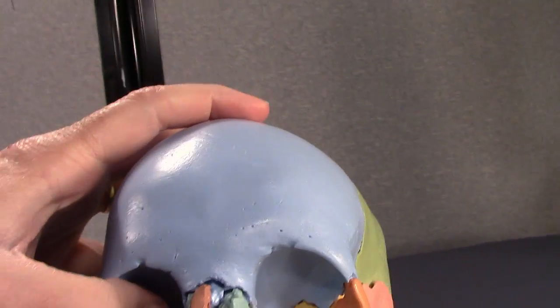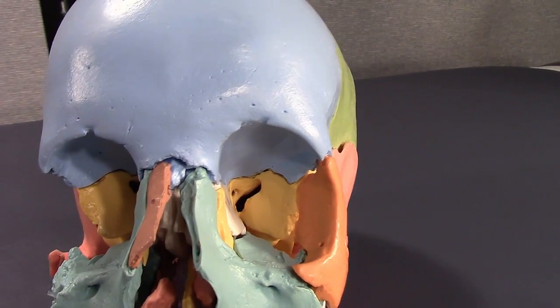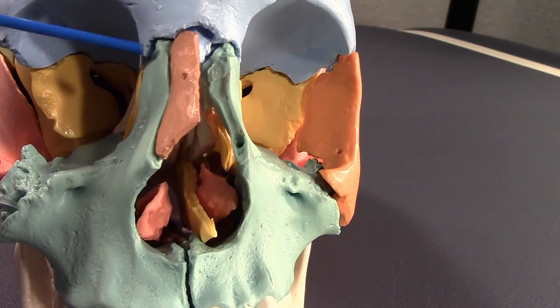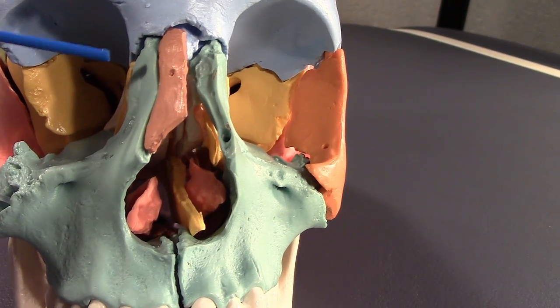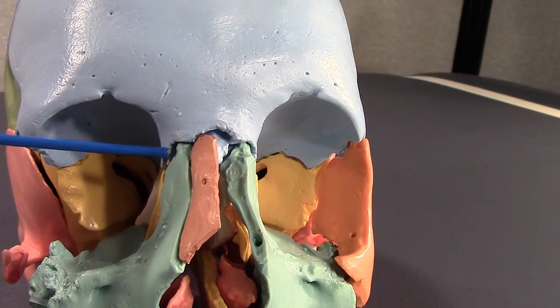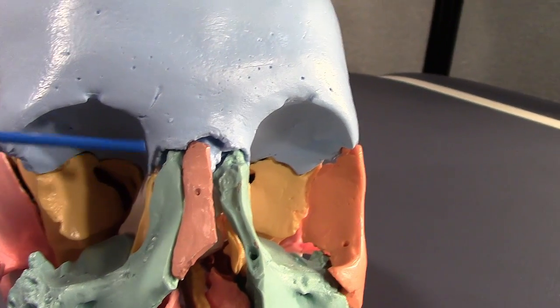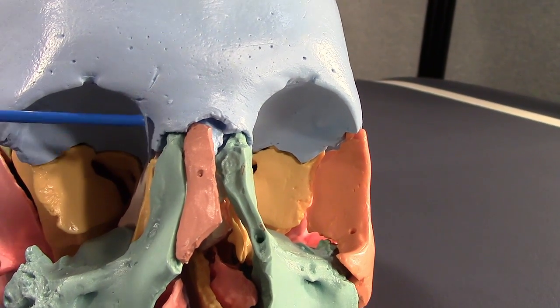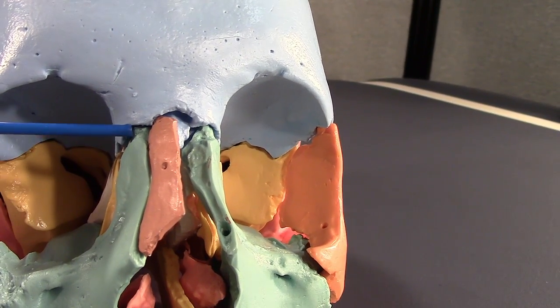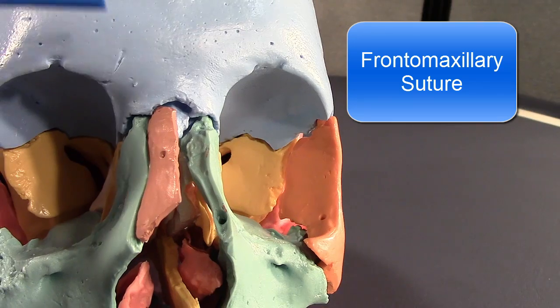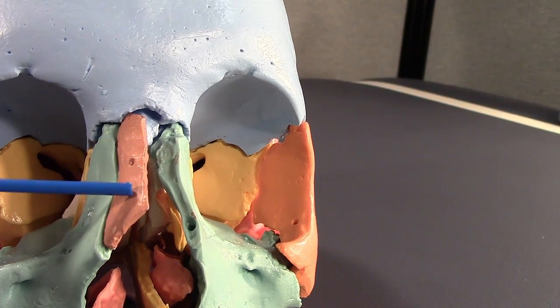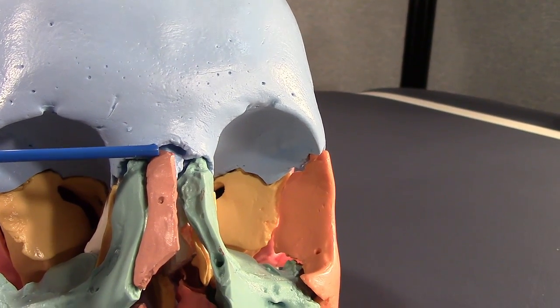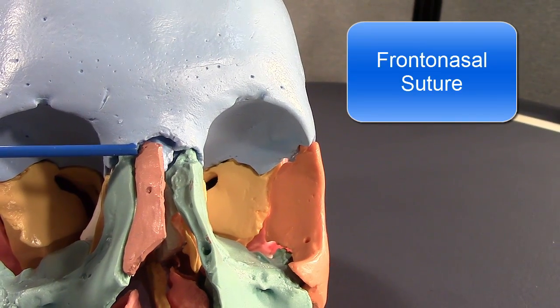Now we have some sutures we need to talk about. First, the nasal part of the frontal bone has some sutures. So we have a maxilla, it's right here. There's an articulation with the maxilla, specifically the frontal process of the maxilla right through here. When it comes to naming, the frontal bone has a lot of power, so it always goes first. So this is the frontal maxillary suture. We have an articulation with the nasal bone. This would be the frontal nasal suture.